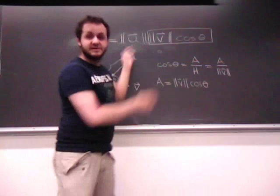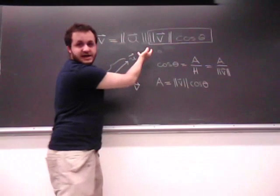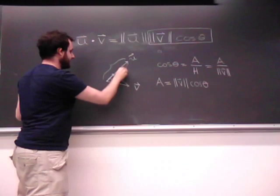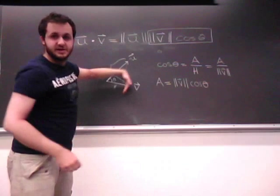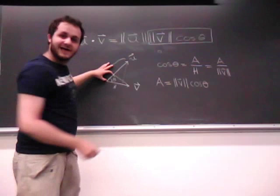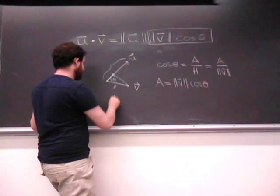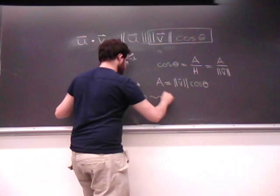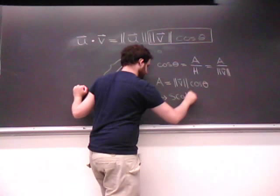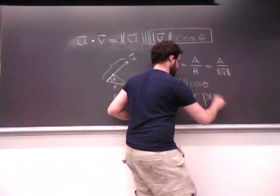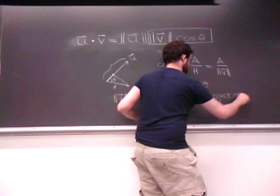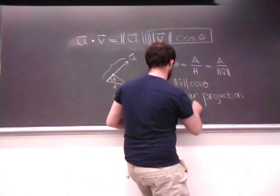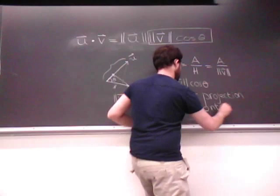A similar thing can be done in reverse. If we had just reversed the multiplication here so that it was magnitude of v times the magnitude of u cosine theta. But it would be the same thing because what you would get is dropping the perpendicular onto v from u. We call this the scalar projection, by the way.